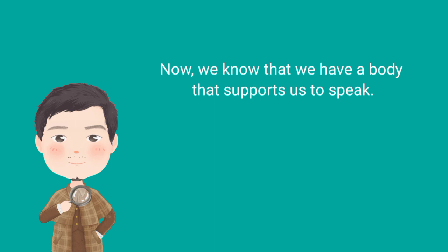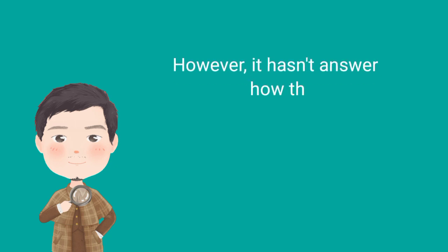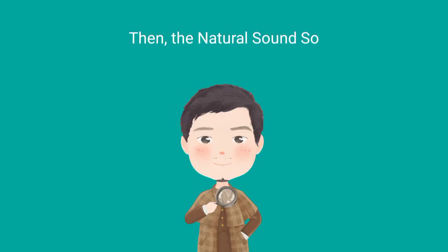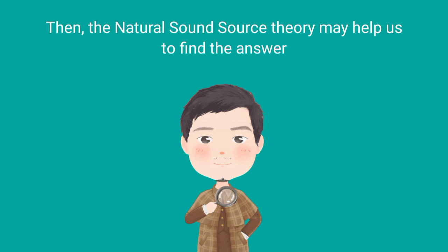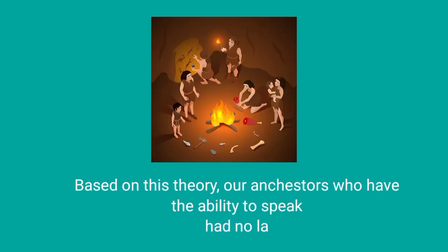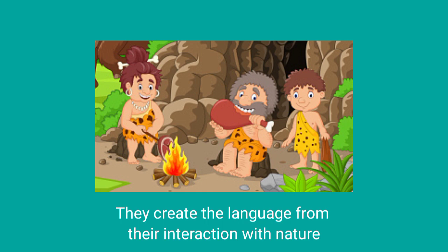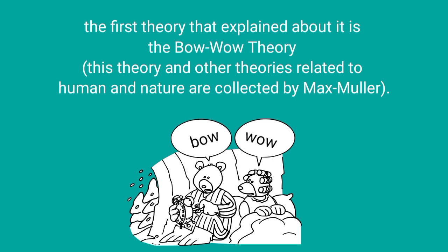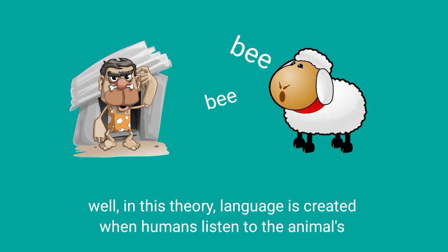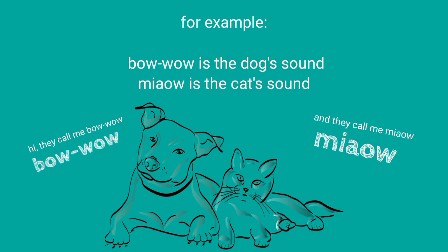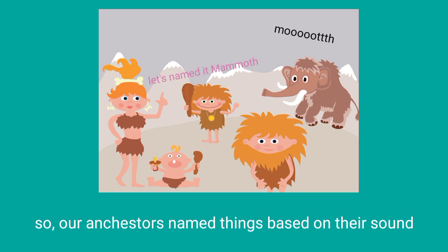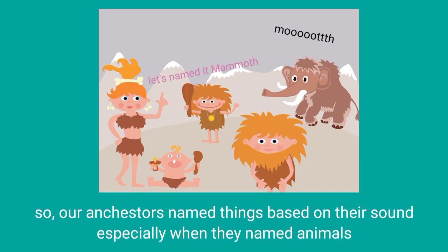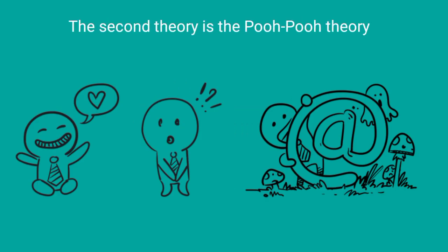Now we know that we have a body that supports us to speak. However, this doesn't fully answer how language was created. The natural sound source theory may help us find the answer. Based on this theory, our ancestors who had the ability to speak had no language at that time, so they created language from their interactions with nature. The first theory that explains this is the Bow-wow theory — in this theory, language is created when humans listen to animal sounds. For example, 'bow-wow' is the dog's sound and 'meow' is the cat's sound. So our ancestors named things based on their sounds, especially when they named animals.